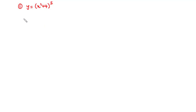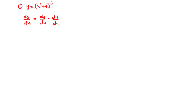To find the derivative of a composite function, we deploy what we call the chain rule. According to the chain rule, given that y is a function of x, the derivative of y with respect to x equals the derivative of y with respect to u times the derivative of u with respect to x. The first step is to let u = x² + 4.